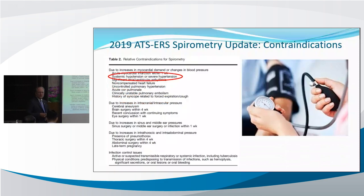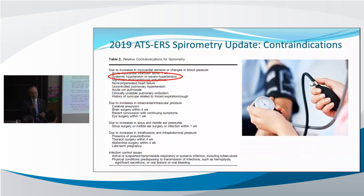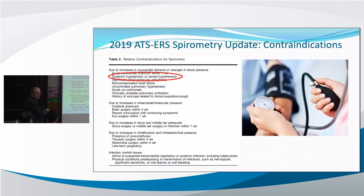In the original spirometry technical standard, there was only one contraindication listed: an MI within the last month. In the new 2019 spirometry standard, there is a longer list of relative contraindications — things like recent eye surgery within a week or recent brain surgery within a month. These are all related to the increase in intrathoracic pressure when you perform that blasting maneuver.